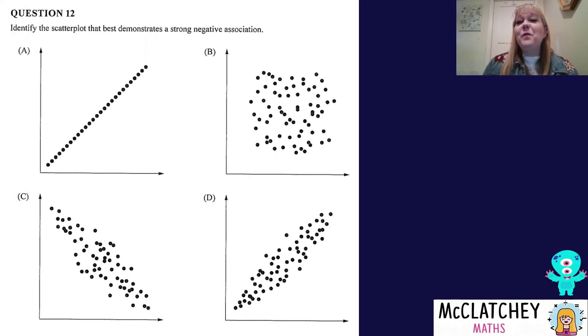Our final question on paper 1 on bivariate data. It has four different scatter plots demonstrating a strong negative association. Let's look at what the other ones are first. The first one follows an exact line, which means it's perfect correlation. And as the x-axis gets bigger, the y-axis gets bigger, which makes it a perfect positive. B, we've got no correlation at all. I could draw a gazillion lines through that set of data. We can't work out what the association is, there's just no correlation at all.